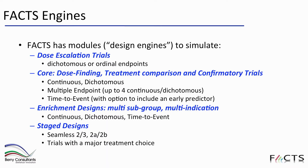In FACTS we've broken up the types of trial you can design into four distinct types. We have dose escalation designs — phase one cancer trial type designs. We have FACTS Core: dose finding, treatment comparison, and confirmatory trial designs where you're comparing one or more arms against a control, with options for continuous, dichotomous, multiple endpoints (up to four continuous or dichotomous), and time-to-event or survival endpoints with an option to include an earlier predictor endpoint.